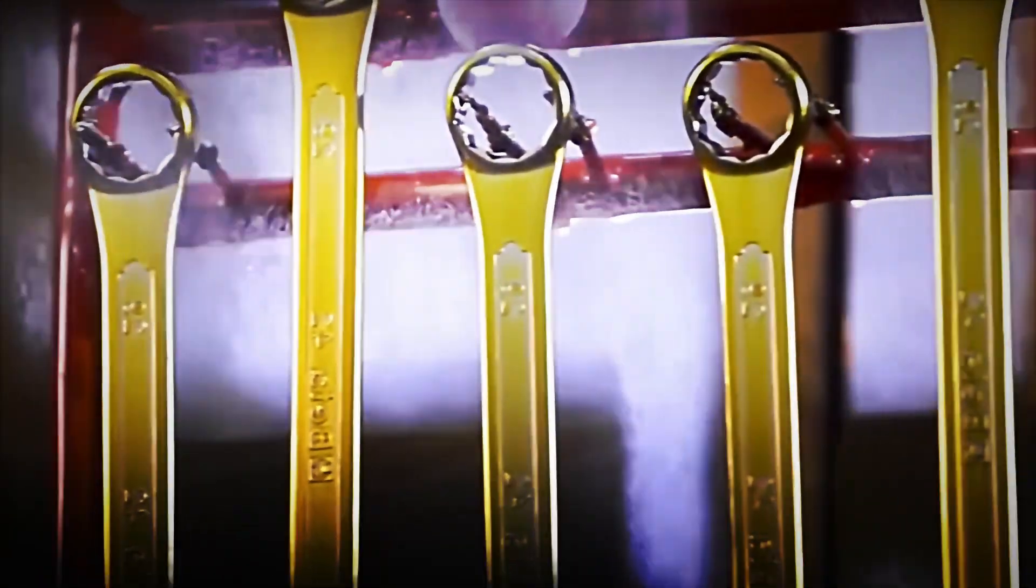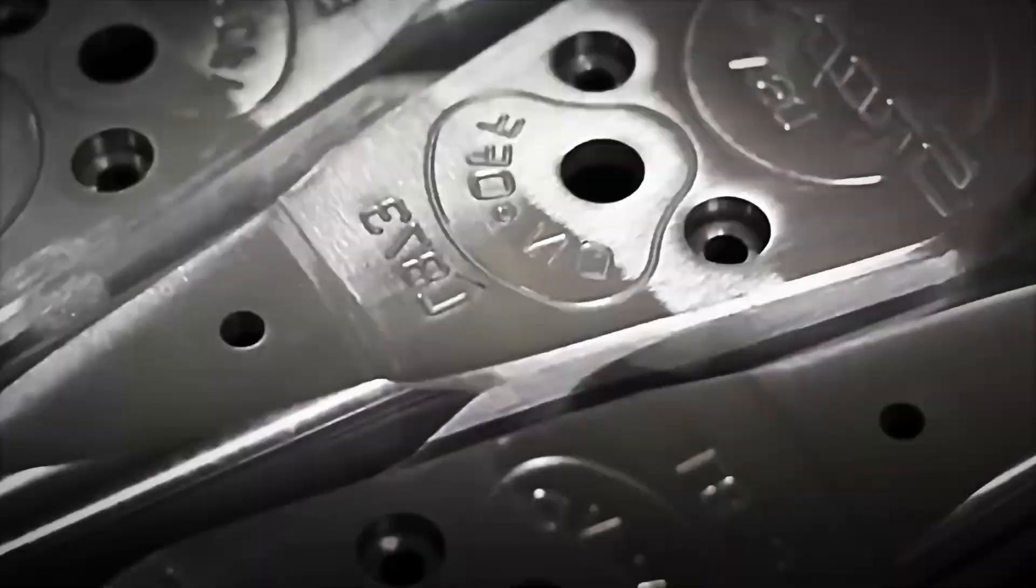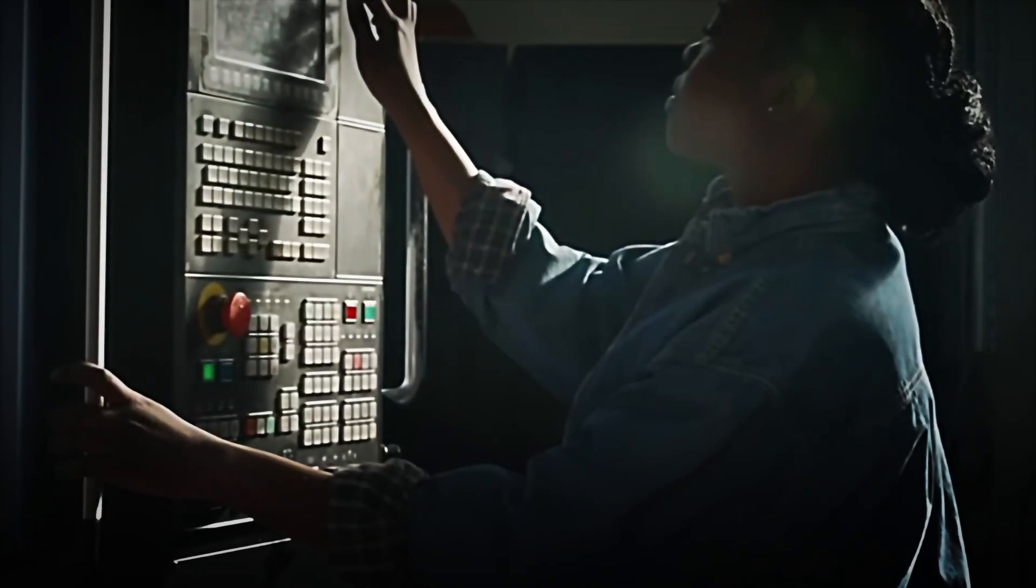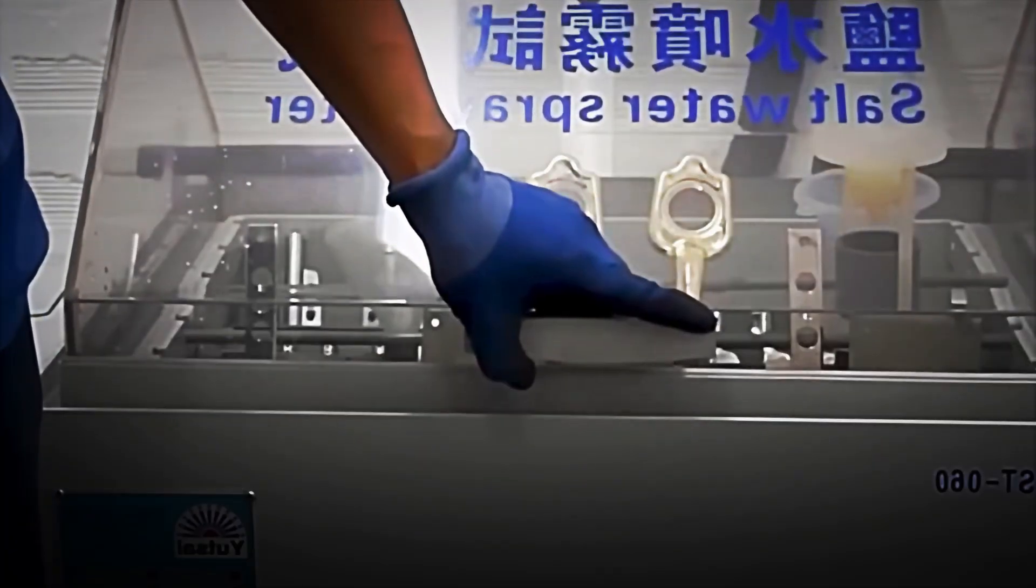Fiber optic laser engraving is used to add measurement in millimeters or inches, relevant standard, manufacturer's brand, batch number, and internal code for tracking. The laser does not alter the strength of the steel, guaranteeing a lasting mark.